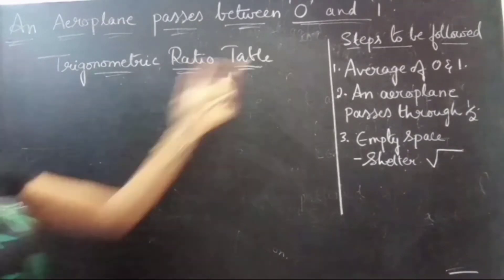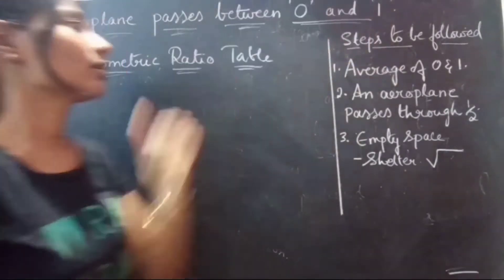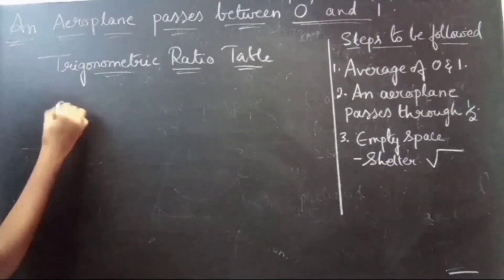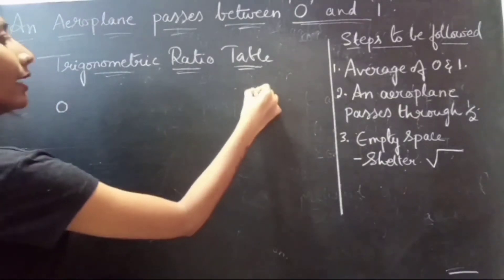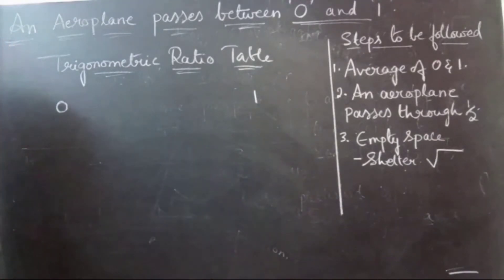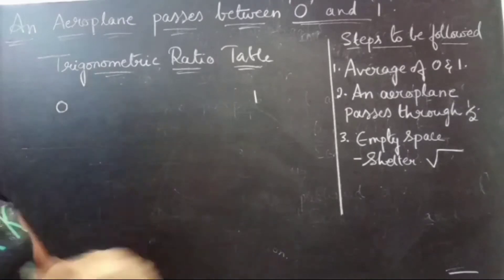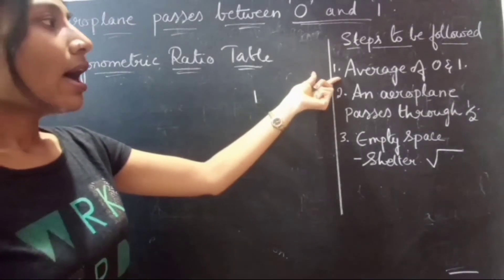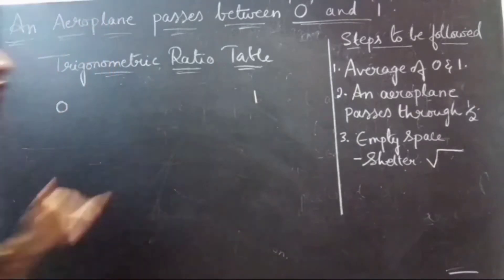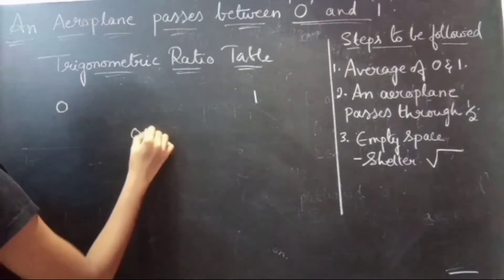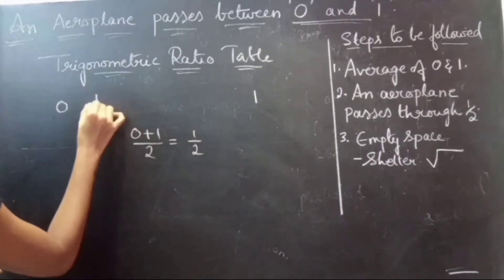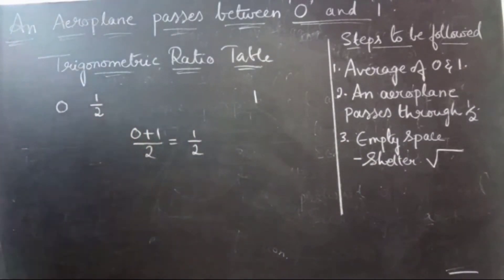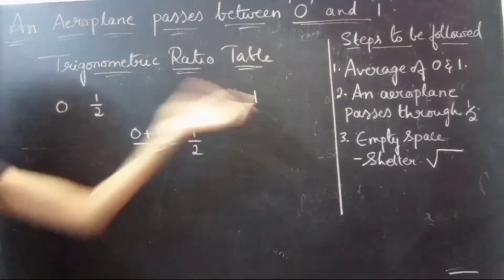The first thing we have to do is consider the two numbers 0 and 1. At the first left you write 0, and at the last right you write 1. Now we follow the steps. Step one: find the average of 0 and 1. 0 plus 1 by 2 equals 1 by 2, so the second number will be 1 by 2.